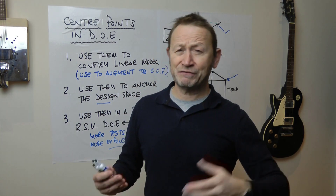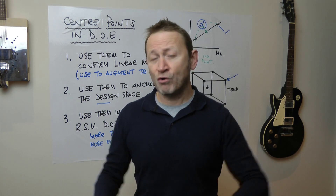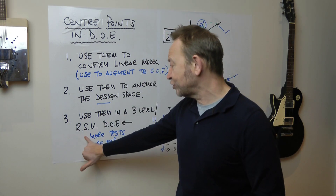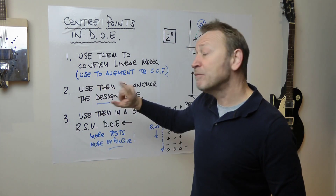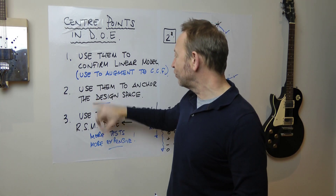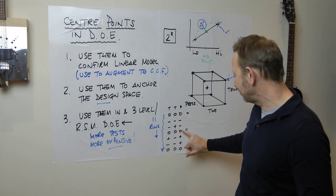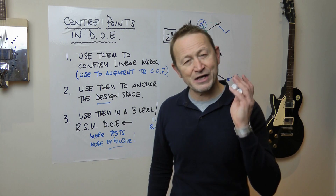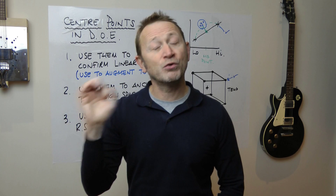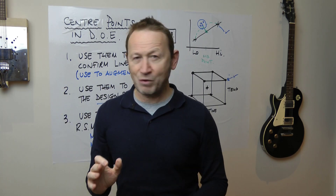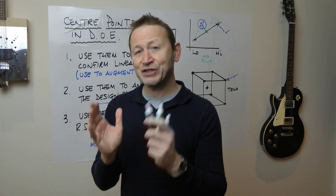When testing is expensive — sometimes you're cutting up samples, X-raying them, and tests can be costly or time-consuming — you don't necessarily want to jump straight to the three-level design. So I like the augmentation technique, but from now on I'm going to do it combined with the anchoring approach: centre point first, centre point in the middle, centre point at the end. That enables me to anchor the design space, or at least prove that I've anchored it.